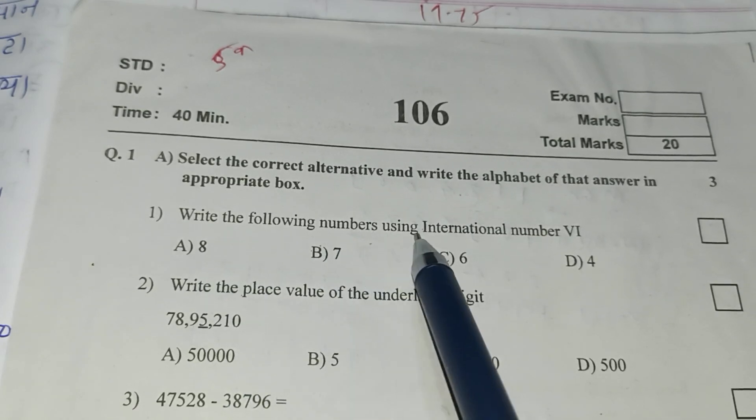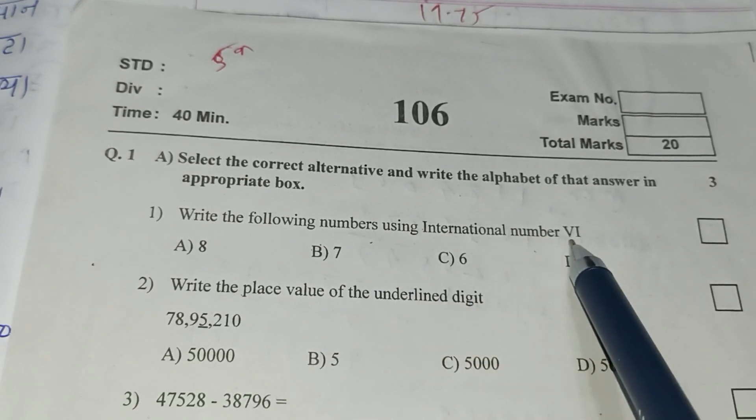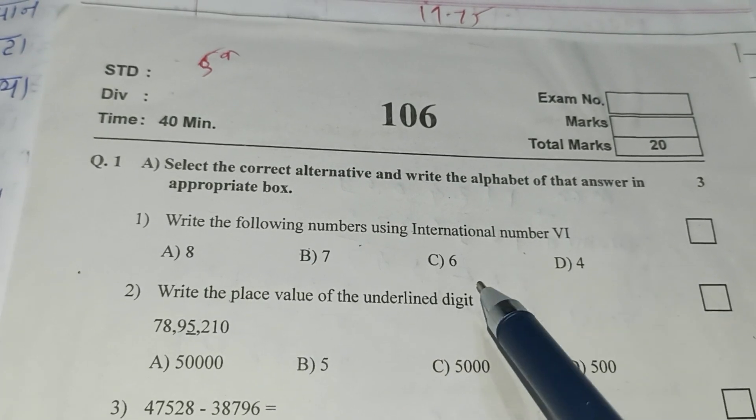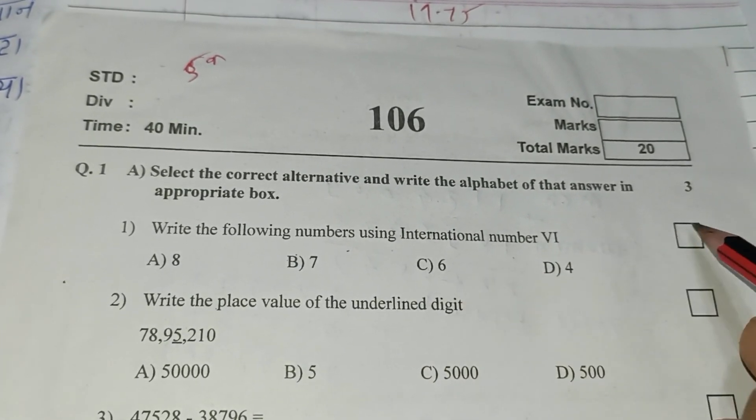Write the following numbers using international number system. Phi means 6. Alphabet letter C.